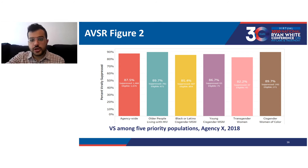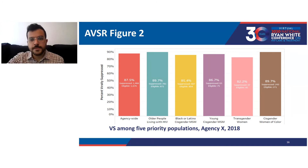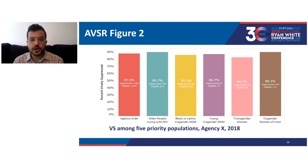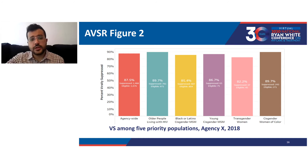The priority population categories do not account for all clients at the agencies, nor are they all mutually exclusive from one another. Clients can be classified in as many priority populations as they fit. For example, a client can be represented in both older people living with HIV and transgender women, or Black or Latino cisgender MSM and young cisgender MSM. However, a client cannot count in both older people living with HIV and young cisgender MSM — those two groups are mutually exclusive.